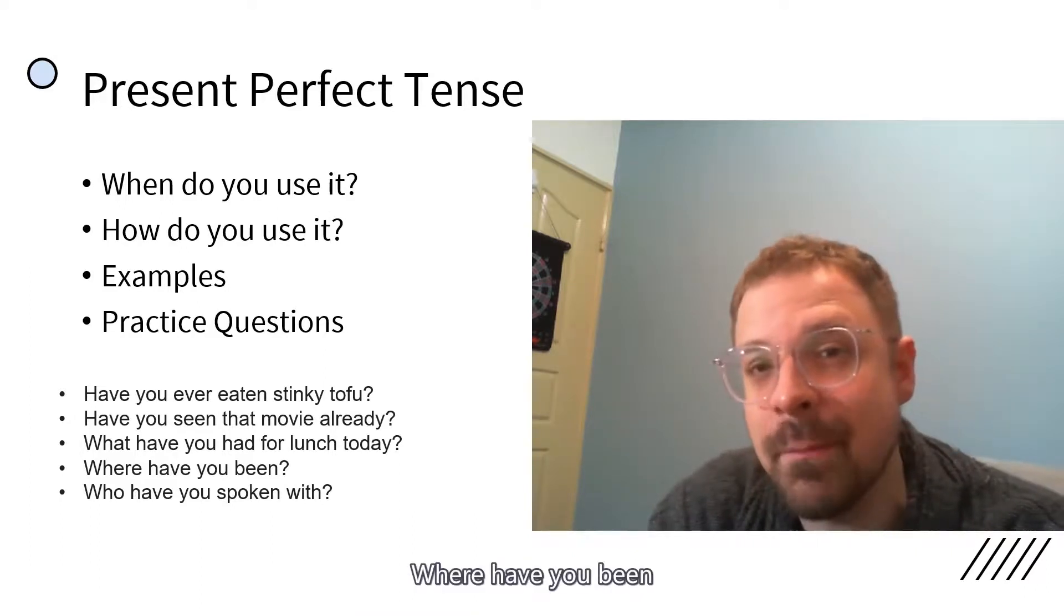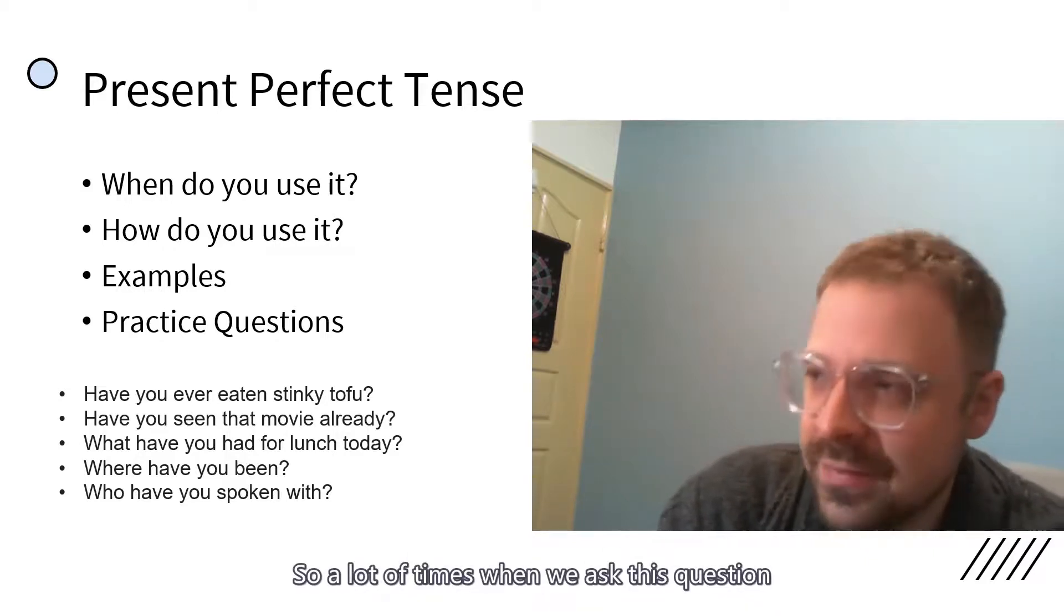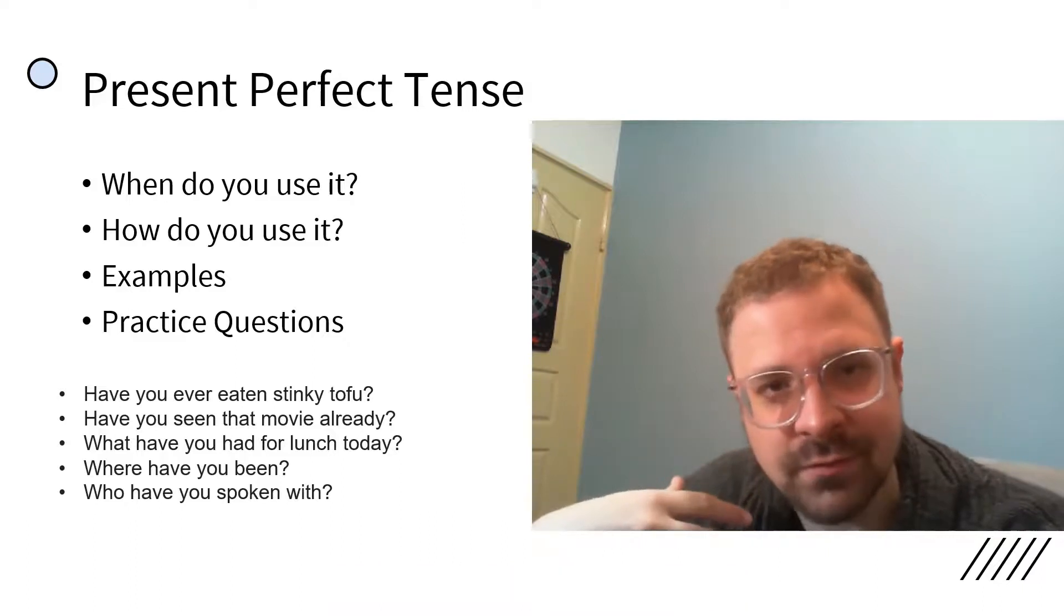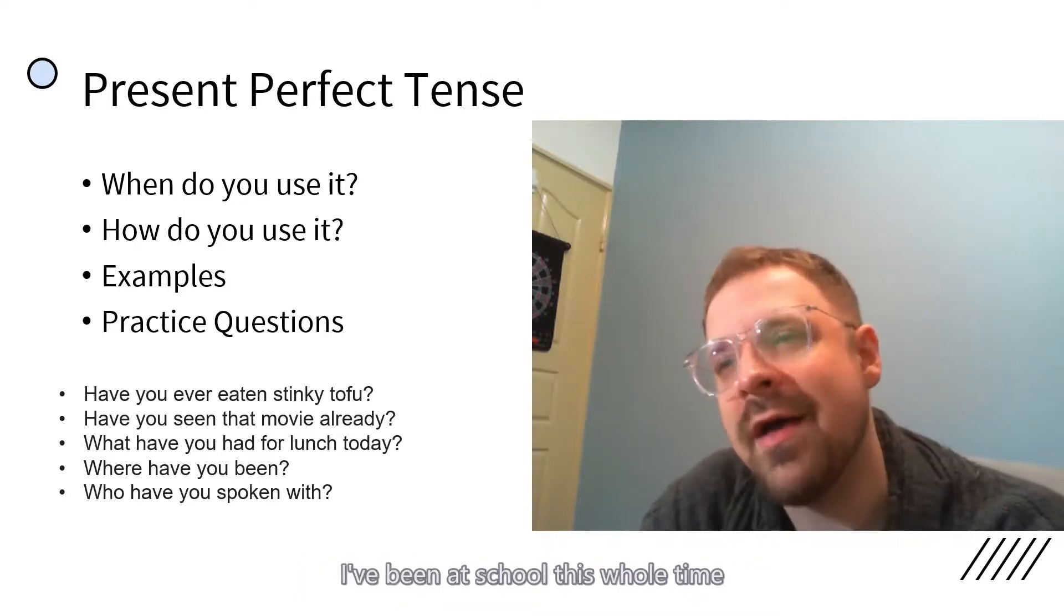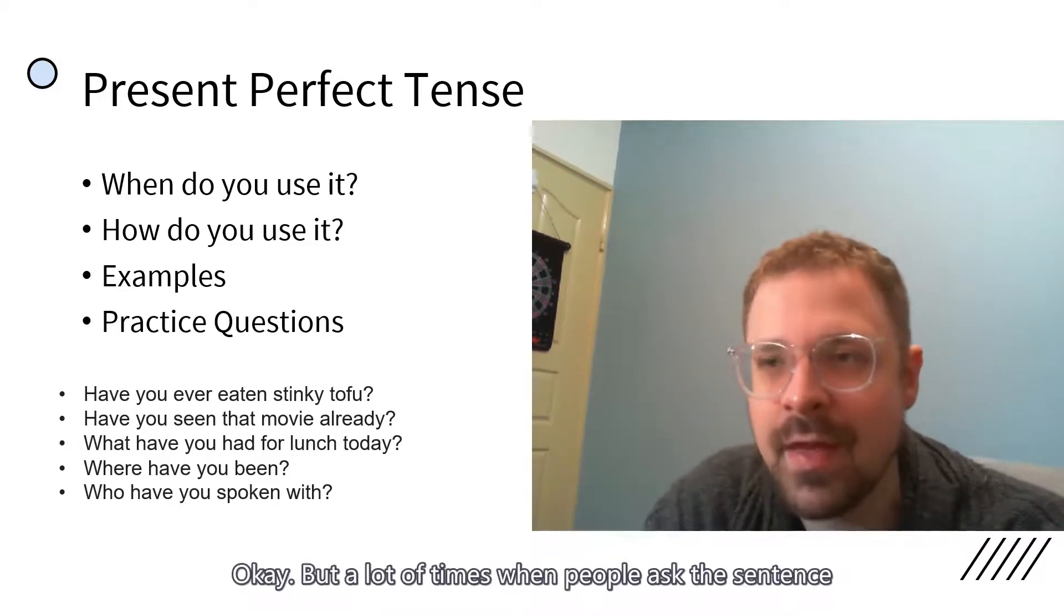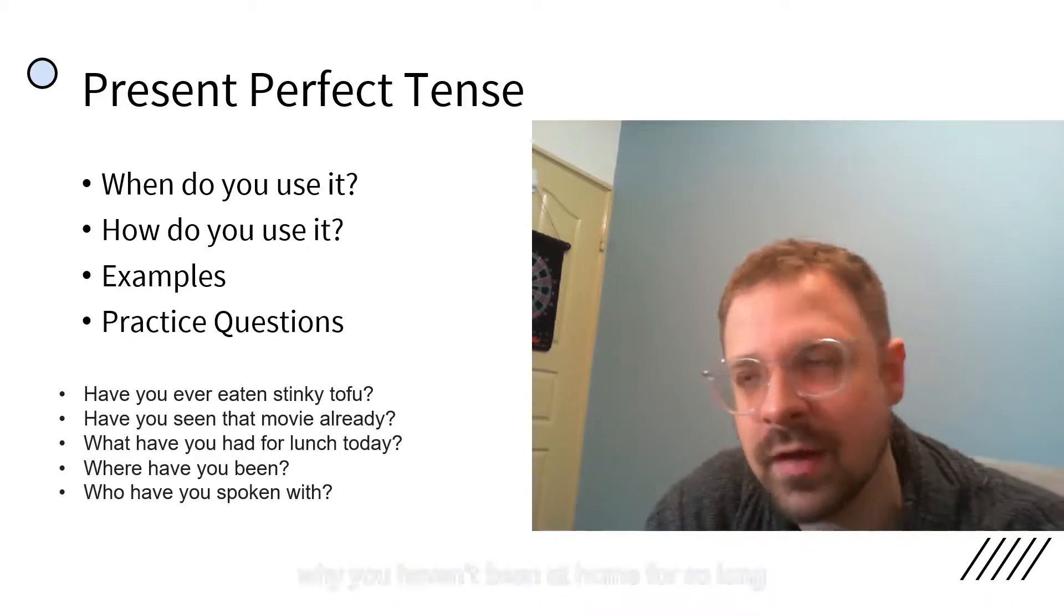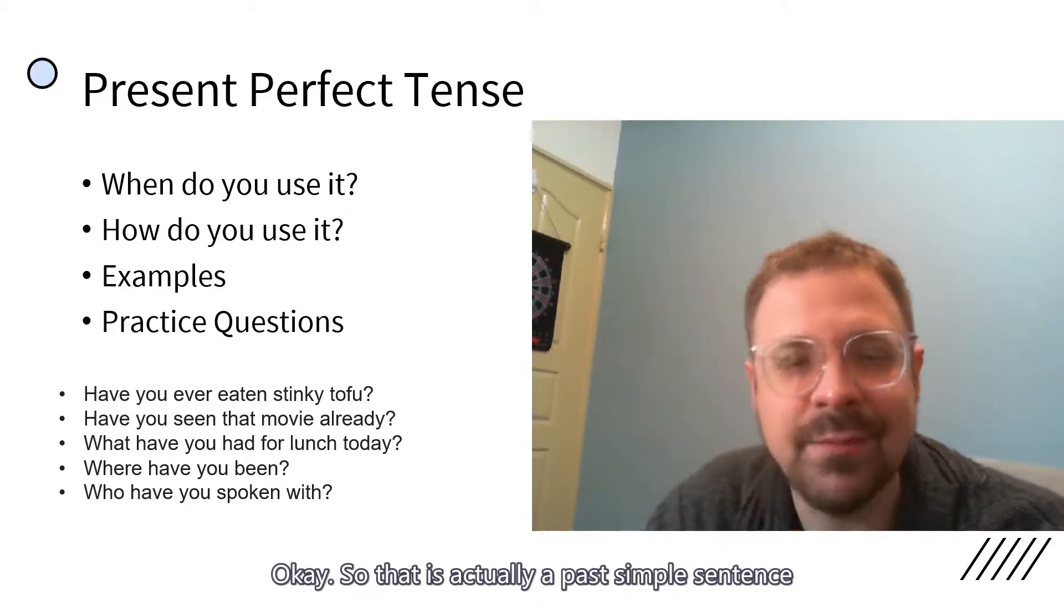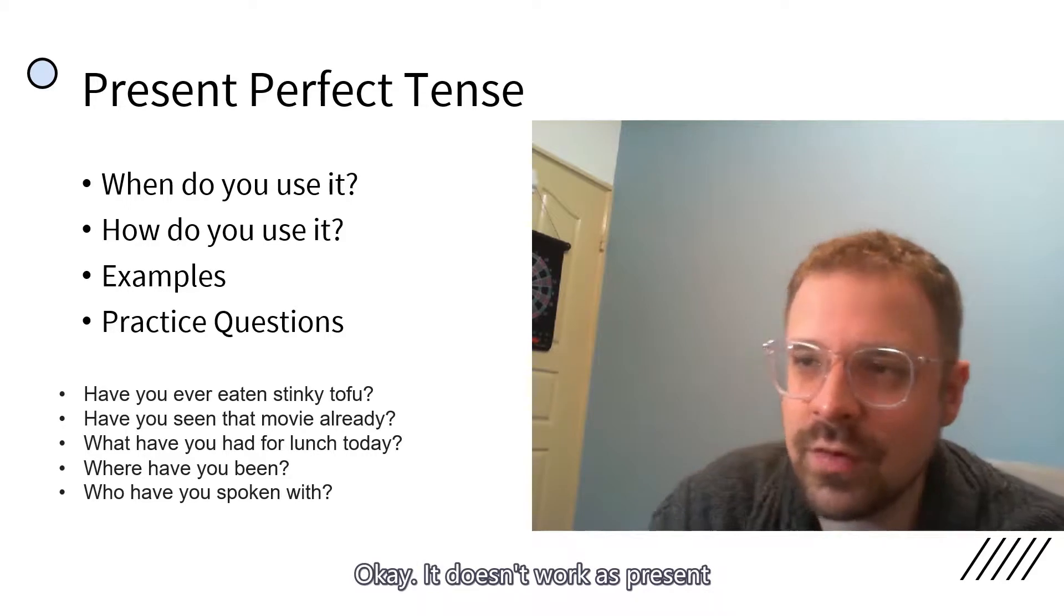Next one. Where have you been? A lot of times when we ask this question, this is one of the questions where we will actually answer in different tense than the question, which makes it a little confusing. But it's fully possible to answer in present perfect tense. Where have you been? I've been at school this whole time. But a lot of times when people ask this sentence, maybe it's your mom wondering why you haven't been at home for so long. And you say, oh, I was with my friends. So that is actually a past simple sentence. Similar in many ways, but it doesn't work as a perfect tense.